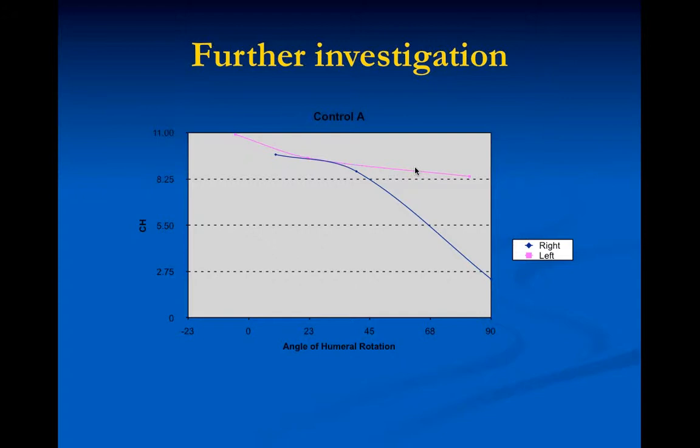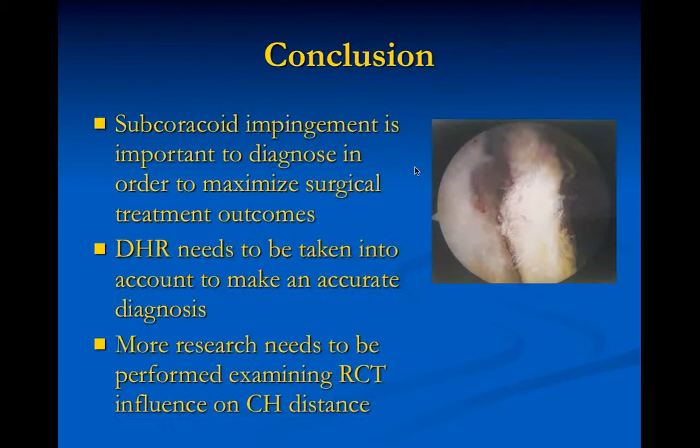Whenever you try to use numbers to make a diagnosis, the old saying is: if you see a radiologist with a ruler, you're seeing somebody in trouble. Straight numerical measurements are fraught with a lot of potential difficulties, as we see here.